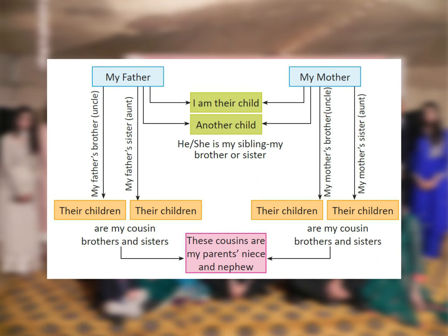I am their child. Another child — he or she is my sibling, my brother or sister. These cousins are my parents' niece and nephew.